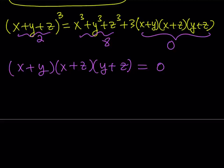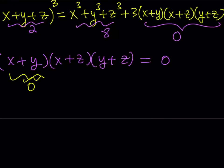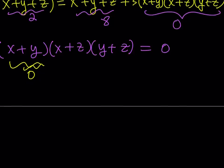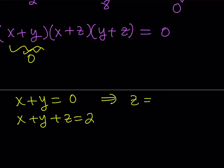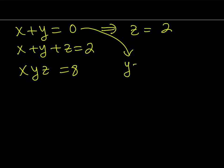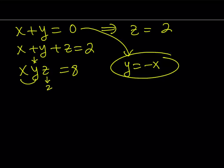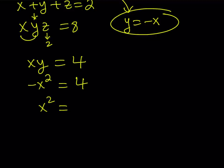So let x plus y equal 0. If x plus y is equal to 0, we also know that x plus y plus z is equal to 2, so we immediately get z is equal to 2 — we got one of the solutions. This also gives us more, because xyz equals 8. From x plus y equals 0, we can say y equals negative x. Substituting and knowing z equals 2, this gives us xy equals 4. With y equal to negative x, we get negative x squared equals 4, so x squared equals negative 4. Obviously x is not a real number — we're dealing with complex numbers.